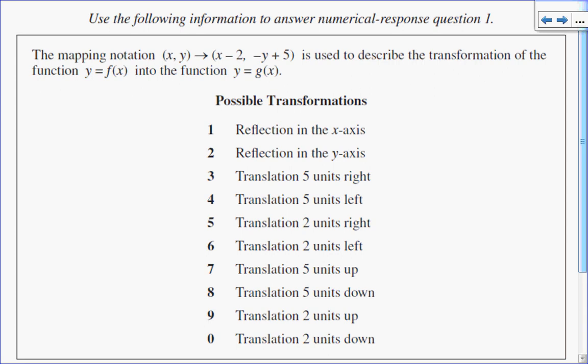Mapping notation is literally what happens point to point, so I'm going to follow it as shown. First, I have x - 2. That literally means I'm taking every x value and decreasing it by 2.